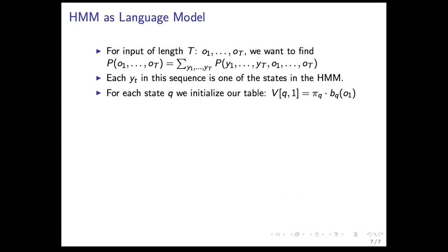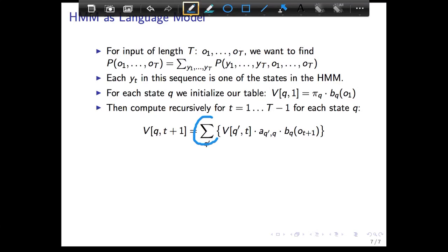For each state Q, we initialize our table, and that's just starting at Q and generating O sub 1. Then the algorithm is the same as Viterbi - instead of max, we just sum over all the different scores we get.